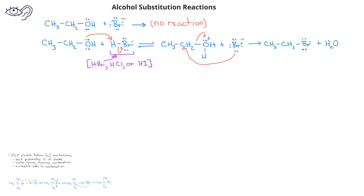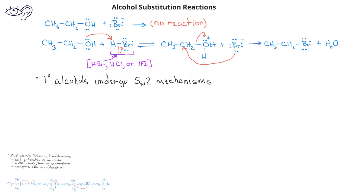Primary alcohols, on the other hand, will undergo SN2 reactions. Once we have the protonated alcohol, the bromide ion, or other halide ion, will attack the carbon bonded to the oxygen. And at the same time, the sigma electrons between the carbon and the oxygen will be donated to the oxygen to form the water leaving group.